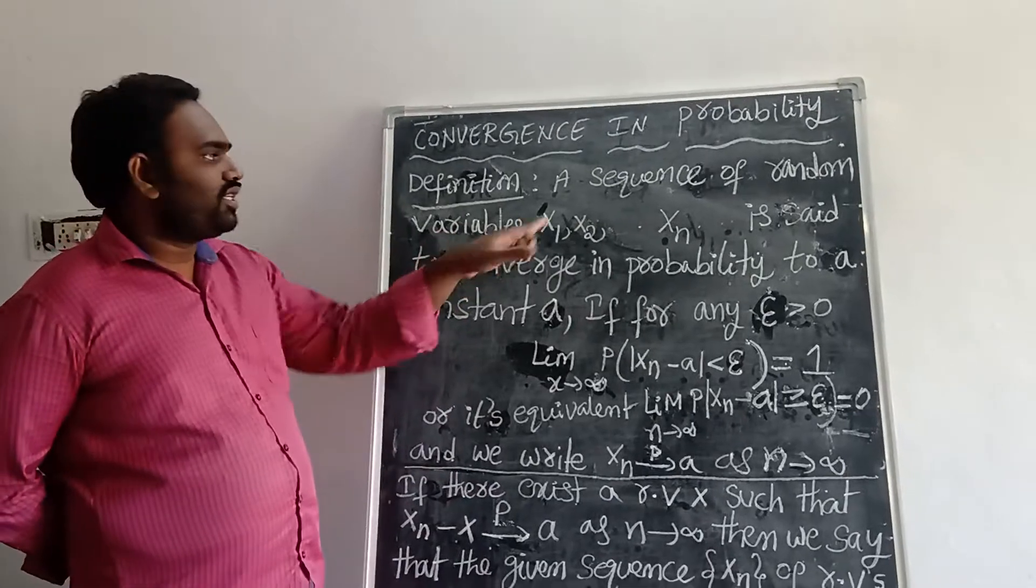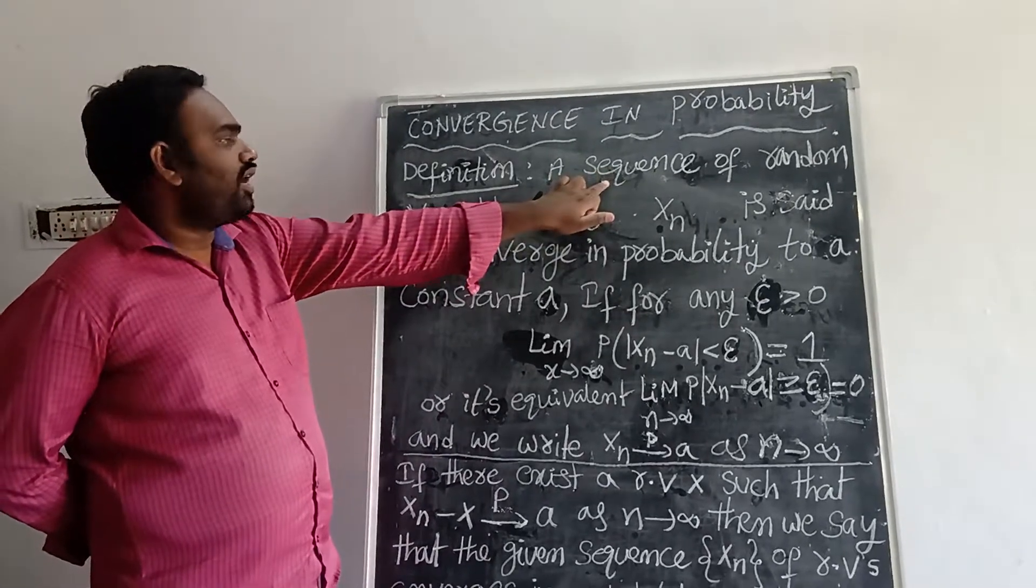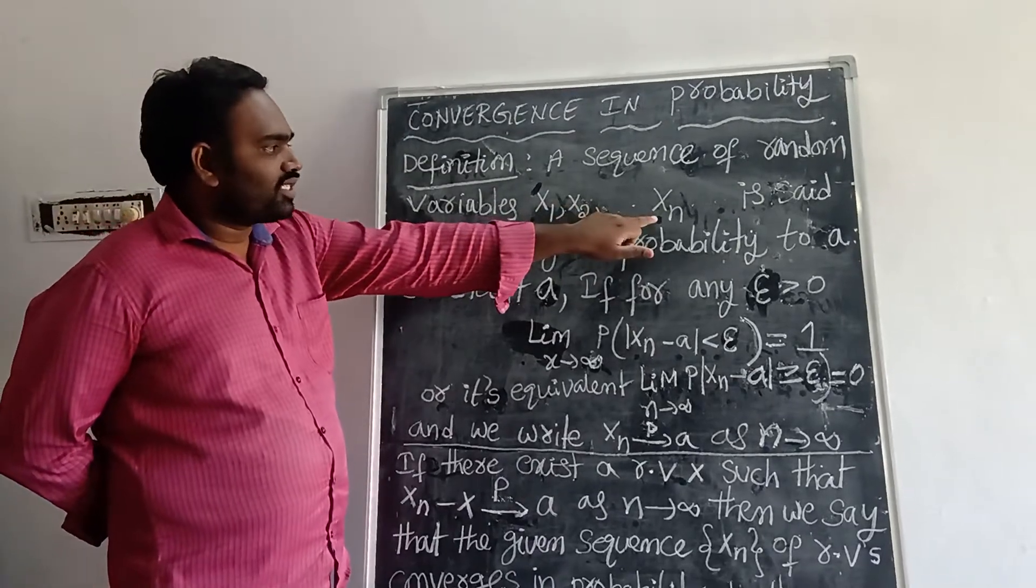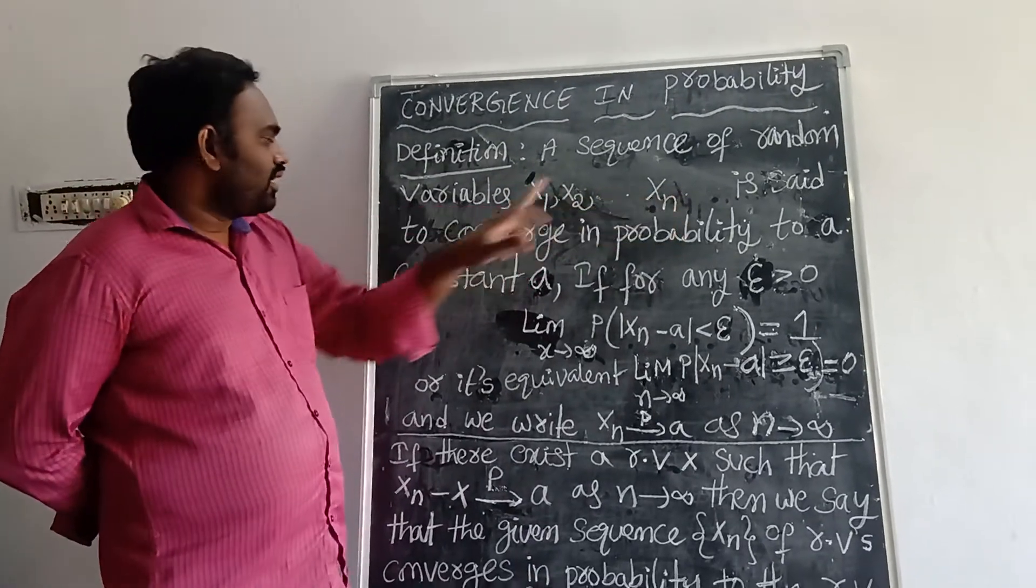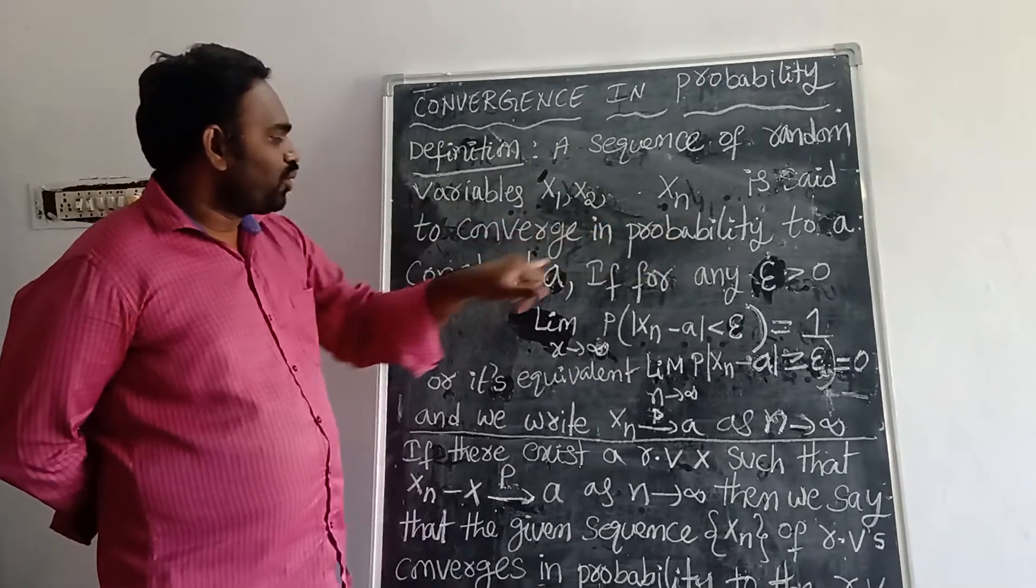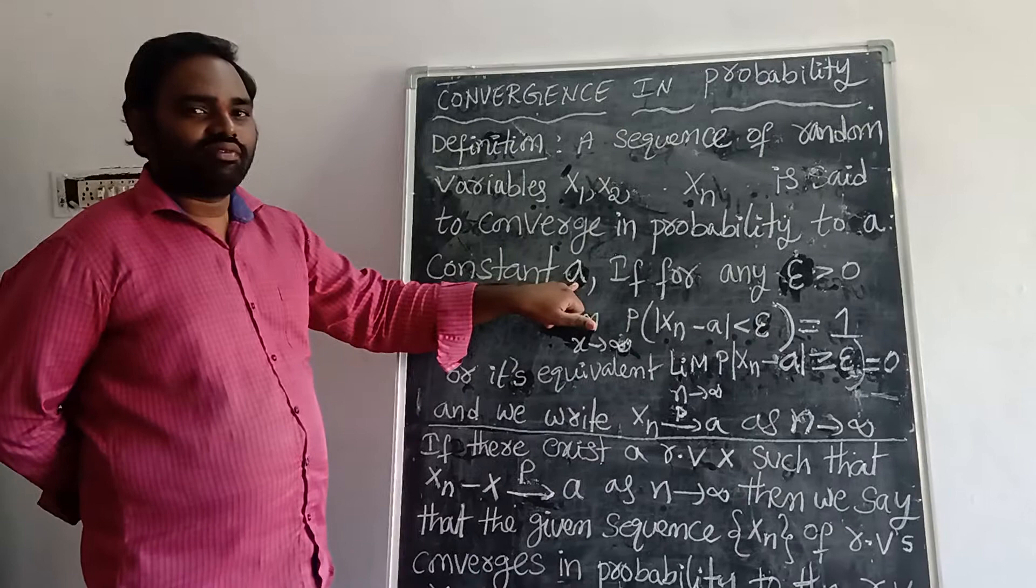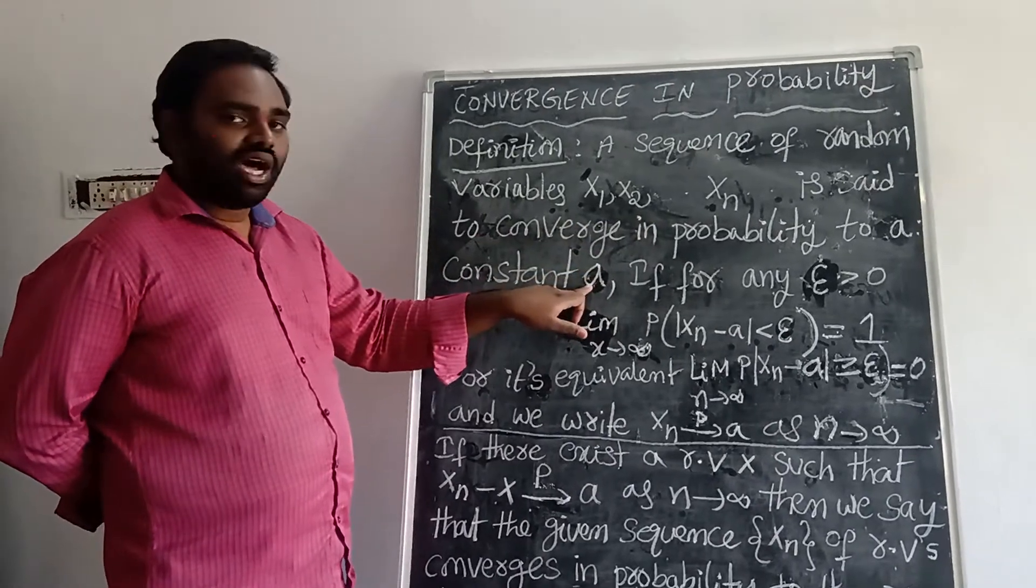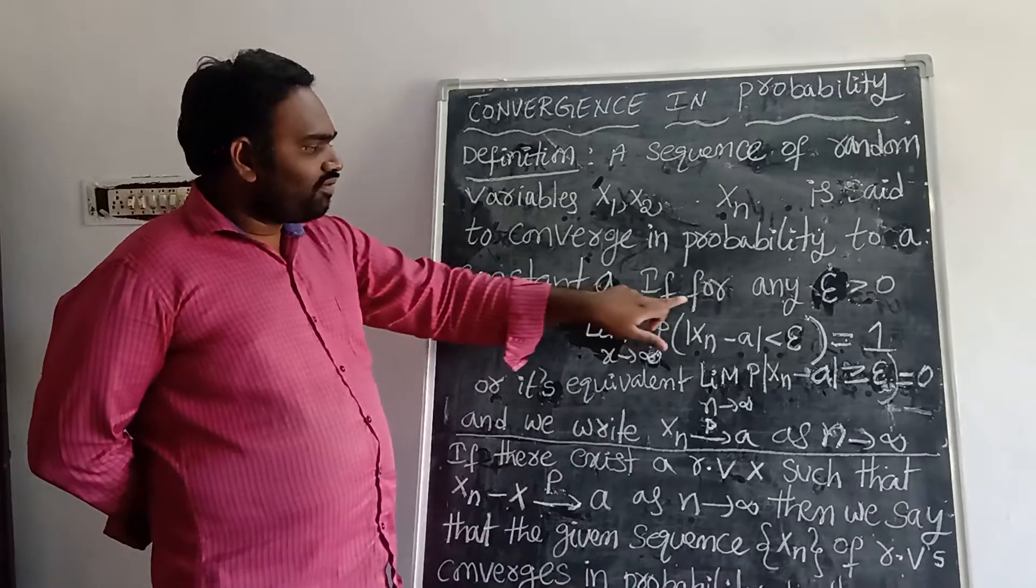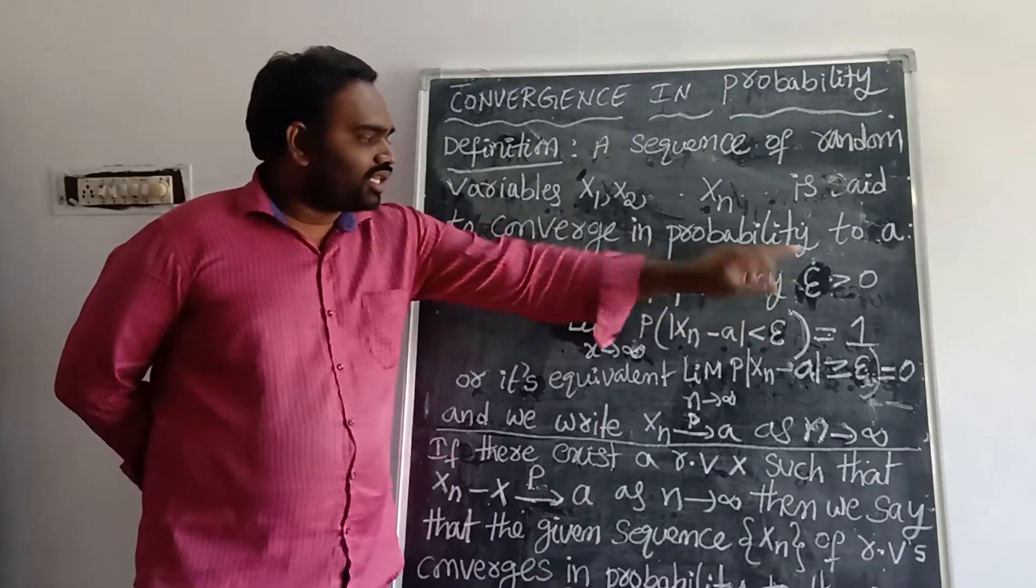Coming to the definition: a sequence of random variables X₁, X₂, and so on, Xₙ and so on, is said to converge in probability to a constant A (small a). That means convergence in probability means almost nearly equal to, tending to small a, if for any epsilon greater than